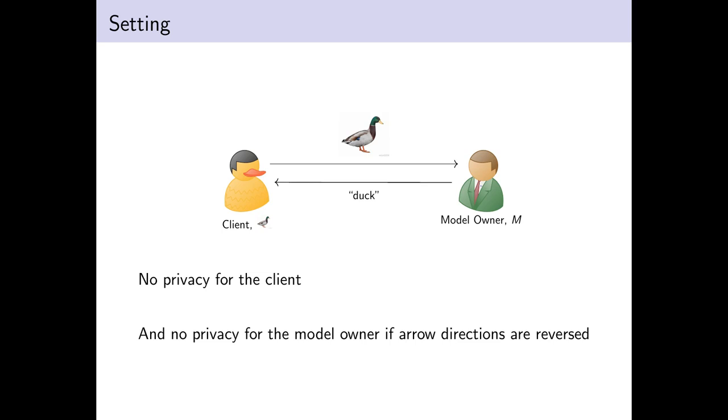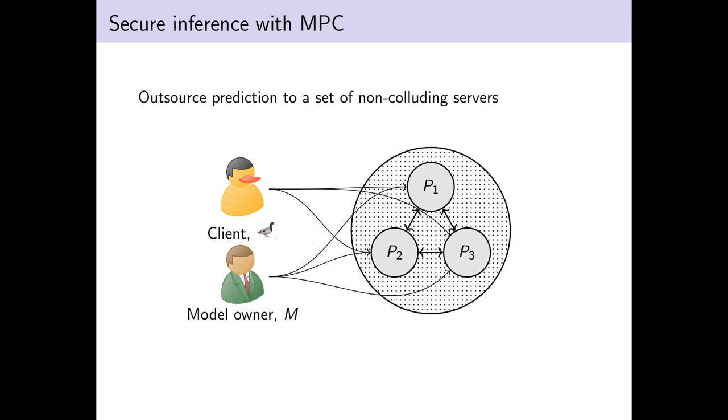But we can fix this, at least theoretically, by throwing MPC at it. We consider this outsourced setting where the client and model owner outsource their computation to a set of servers. They secret share the data to each of the servers, the servers run a secure computation, and then the result is given back to the client. The guarantees are that if none of the servers collude, then the privacy is preserved of the picture and the model.